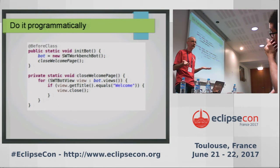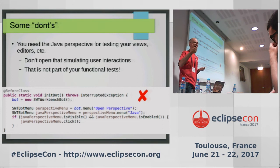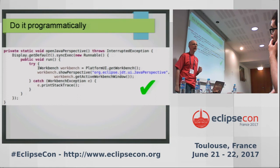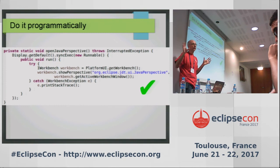Similarly, if your plugin needs the Java perspective, don't try to open it by simulating user operations — that's not your business. Your plugin only needs the Java perspective but you don't have to test that the user is able to open it. Do it programmatically using the Eclipse workbench API. In that case, your functional tests will be faster and more readable, because they won't deal with something that's not part of your framework.